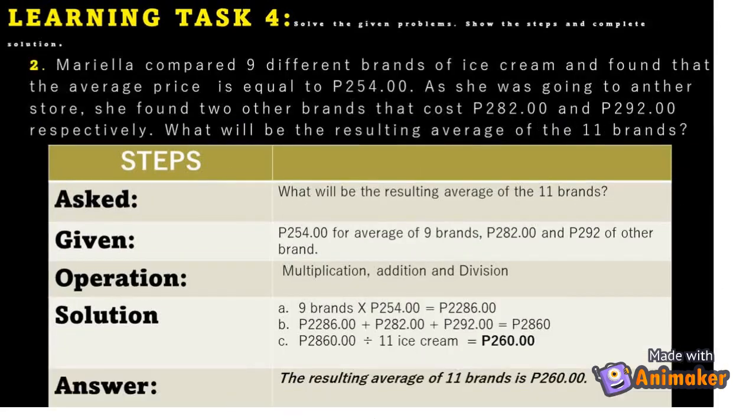Number 2: Mariella compared nine different brands of ice cream and found that the average price is 254.00 pesos. As she was going to another store, she found two other brands that cost 282.00 pesos and 292.00 pesos respectively. What will be the resulting average of the 11 brands?